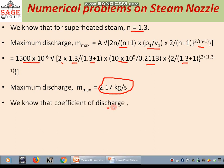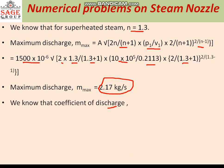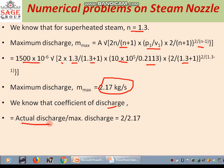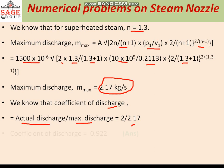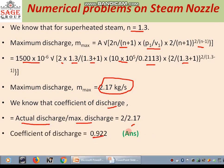The coefficient of discharge is the ratio of actual discharge to maximum discharge, so it is 2 upon 2.17, which gives a value equal to 0.922. This is the coefficient of discharge for this problem.